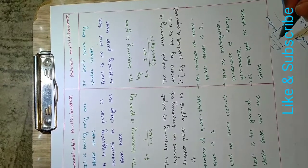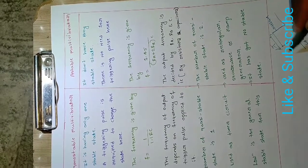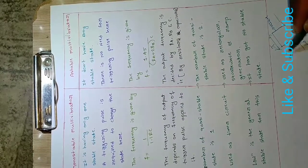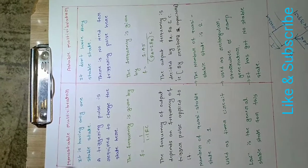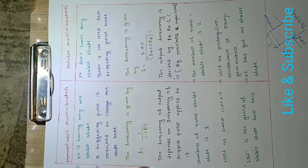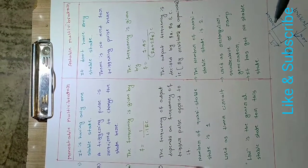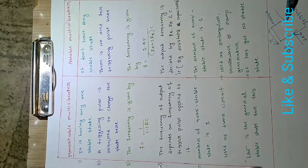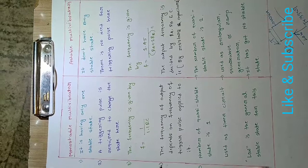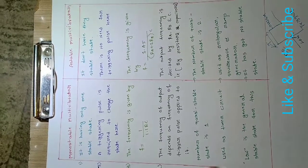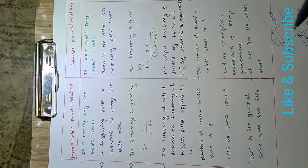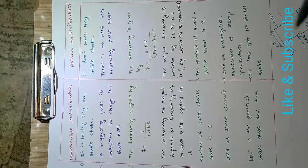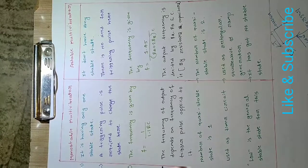That time constant depends on the multiplication of R and C — that is the resistance and capacitance value used at the collector of the transistors.